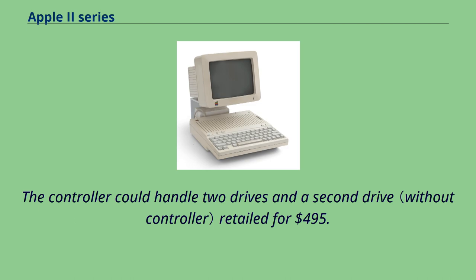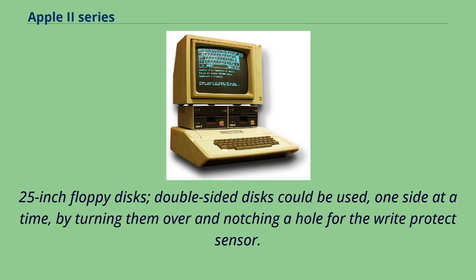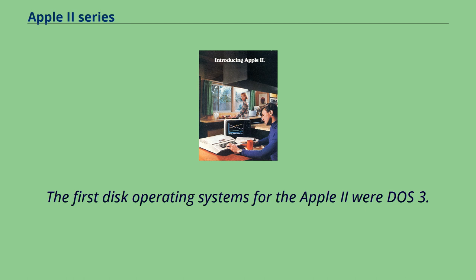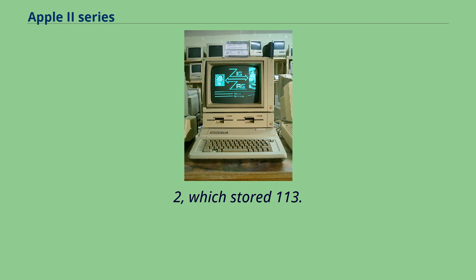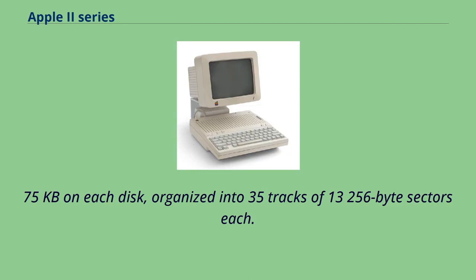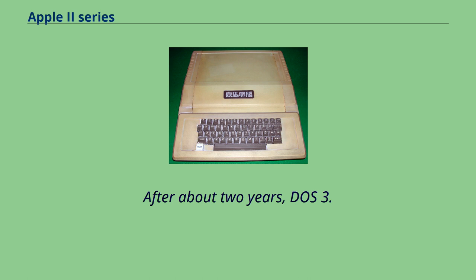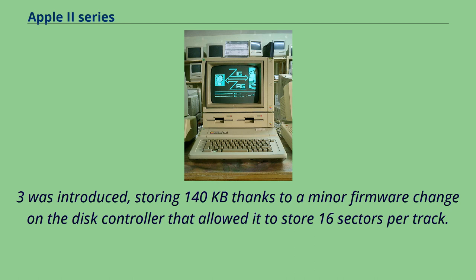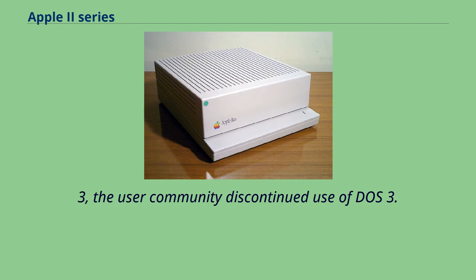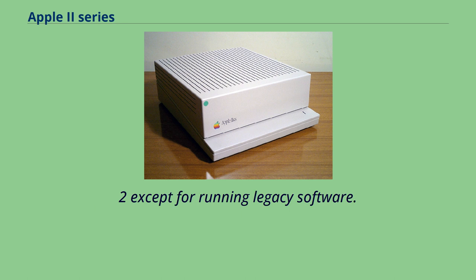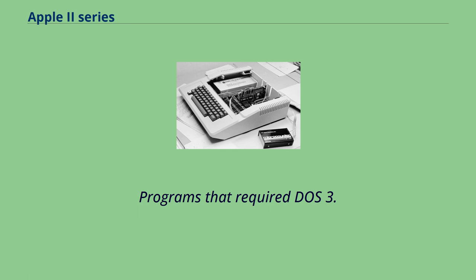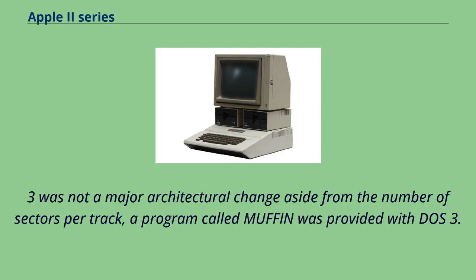The first disk operating systems for the Apple II were DOS 3.1 and DOS 3.2, which stored 113.75 kilobytes on each disk, organized into 35 tracks of 13 sectors each. After about two years, DOS 3.3 was introduced, storing 140 kilobytes thanks to a minor firmware change that allowed 16 sectors per track. After the release of DOS 3.3, the user community discontinued use of DOS 3.2 except for running legacy software. A program called Muffin was provided with DOS 3.3 to allow users to copy files from DOS 3.2 disks to DOS 3.3 disks.